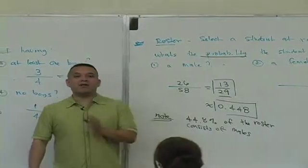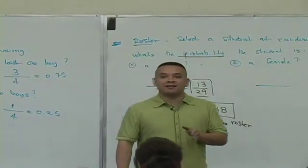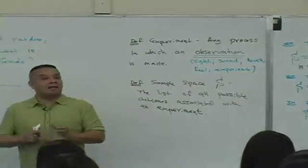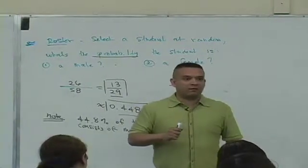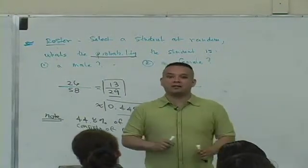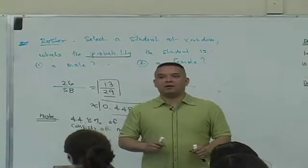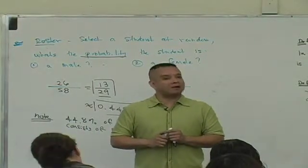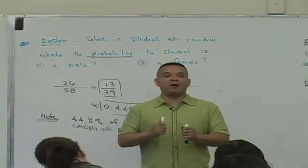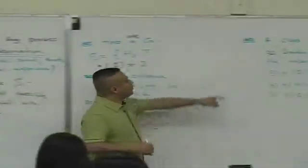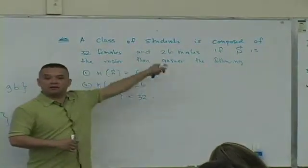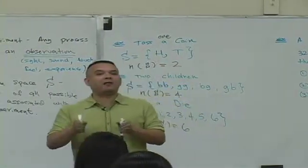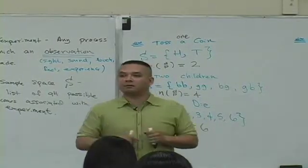Notice something else. When you give them a roster situation and they think, oh, you can either be a boy or a girl — sometimes people say the likelihood is one-half. And that's wrong. Why? Every outcome is not equally likely here. The class consists of 32 females and 26 males — they're not the same value. If we took a count here of how many males and how many females, are we going to get an equal number? No.